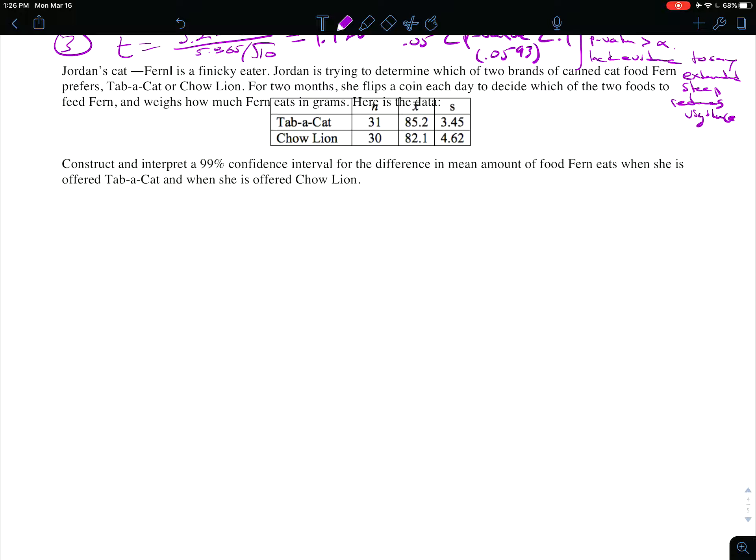Alright, last two problems here in the chapter 9-10 test review. Two brands of cat food: flips a coin to decide which of the two foods to feed Fern the cat. There we go, and we've got n, x-bar, and s for each of the two types there.